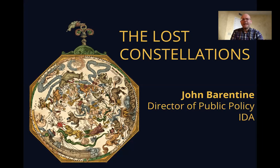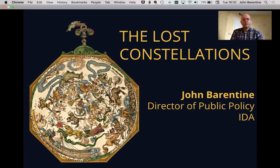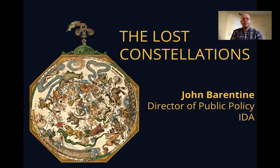Any map of the night sky will show 88 constellations whose names, figures, and boundaries have been constant for nearly a century. But this was not always the case. The quantity of constellations, their names and demarcations, were once the prerogative of the people who drew star charts, causing confusion among astronomers in specifying which stars belong to which figures. In the aftermath of the First World War, European astronomers assembled to form the International Astronomical Union, or IAU, which took up as one of its first tasks to settle the issue once and for all. Completing its work in 1930, the charts the IAU published that year show a canon of official constellations now recognized by astronomers everywhere. Each star in the night sky is now clearly associated with one and only one constellation.